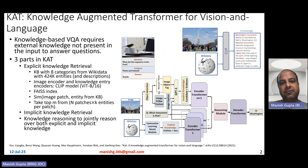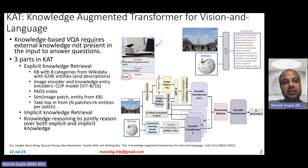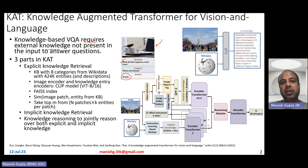One of these tasks is visual question answering. The idea is you're given an image and you have a question: what did this organism evolve from? This is basically categories — plants and animals — and the answer you want to extract is 'reptile.' Notice that the question cannot be completely answered by what is present in the image. It requires external knowledge, which may not be present in the image. Therefore, you need knowledge augmentation — for example, augmenting knowledge from Wikidata.